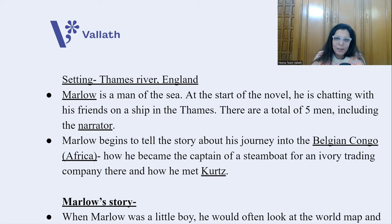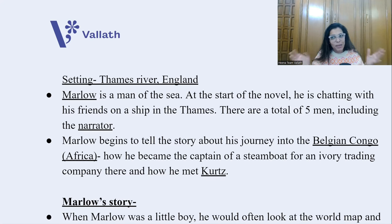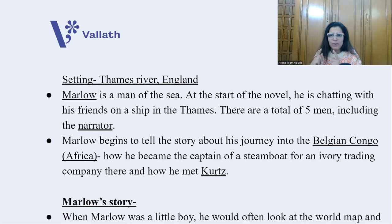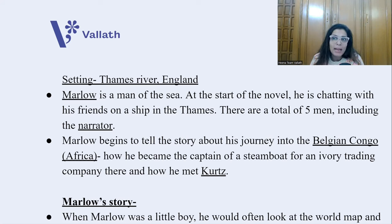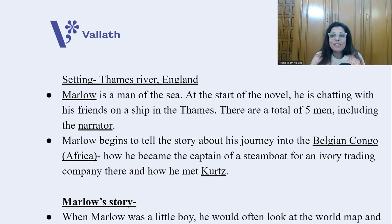The first setting is the Thames River, England. Marlow is introduced as a man of the sea. At the start of the novel he is chatting with friends sitting on a ship in the Thames River — a total of five men, including Marlow, a narrator, a director of a company, and two others. Marlow begins his story about his journey years back into Belgian Congo, Africa — how he became captain of a steamboat for an ivory trading company and how he met a man named Kurtz.